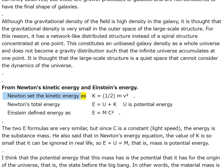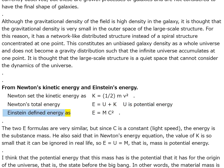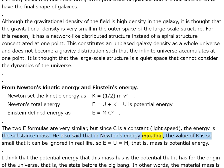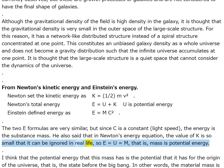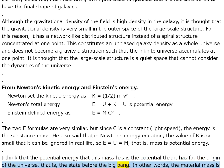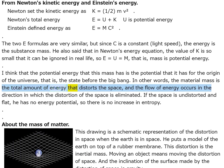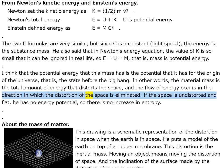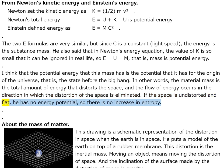Newton set kinetic energy as K = ½mv². Newton's total energy E = U + K, where U is potential energy. Einstein defined energy as E = mc². Since c is a constant (light speed), the energy is the substance mass. In Newton's energy equation K is so small it can be ignored in real life, so E = U = m — mass is potential energy. I think the potential energy that mass has is the potential for the origin of the universe, the state before the big bang. Material mass is the total amount of energy that distorts the space, and energy flow occurs in the direction that eliminates the distortion.